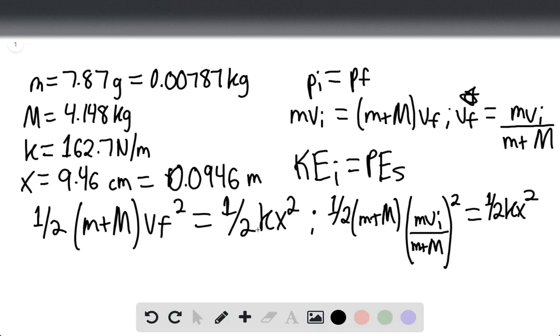After algebraic manipulation, velocity initial equals x times the square root of k (m + M) divided by m.